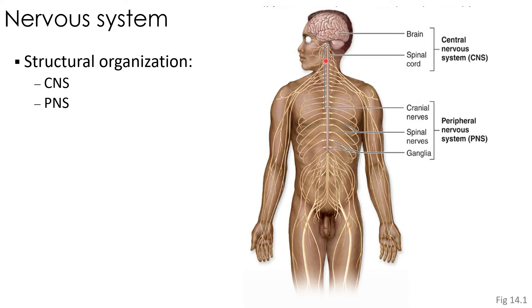The peripheral nervous system consists of the cranial nerves, which are nerves that extend from the brain; the spinal nerves, which are nerves that extend from the spinal cord; and the ganglia, which are clusters of neuron cell bodies that are located outside of the CNS.